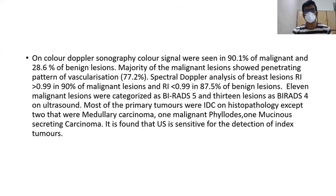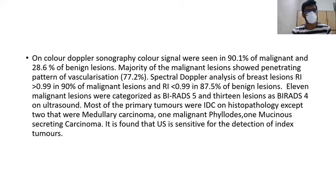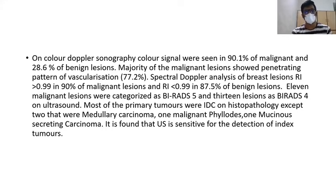Other benign sonographic features included hyperechogenicity and smooth margins in 75% of cases. On color Doppler sonography, color signals were seen in 90.1% of malignant and 28.6% of benign lesions. Majority of malignant lesions showed a penetrating pattern of vascularization. Spectral Doppler analysis showed RI greater than 0.99 in 90% of malignant lesions and RI less than 0.99 in 87.5% of benign lesions.